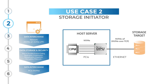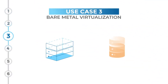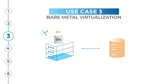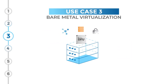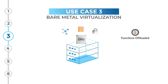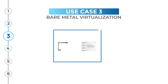On the host side, the Fungible DPU can take on multiple other personas. A use case surging in popularity is bare metal virtualization, or BMV, which allows applications to achieve performance close to that of bare metal servers — highly attractive for performance- and latency-sensitive applications. BMV is realized by offloading functions such as IO virtualization, networking, storage, and security into the Fungible DPU.